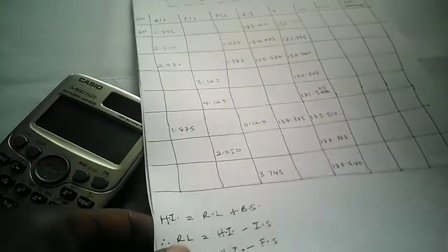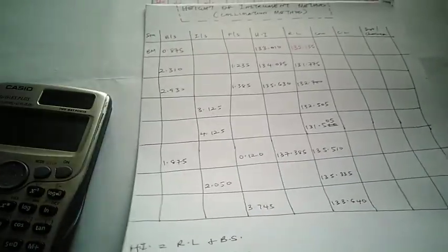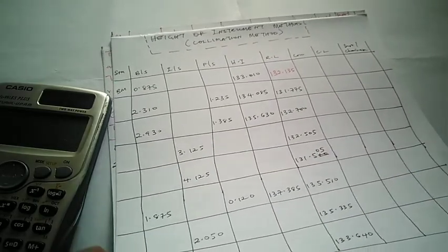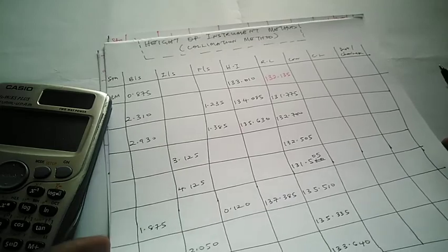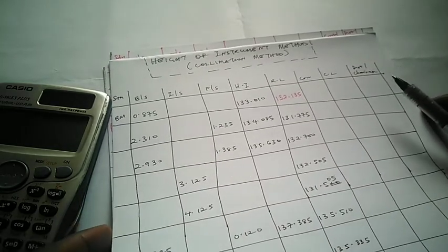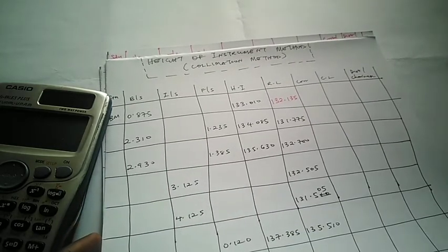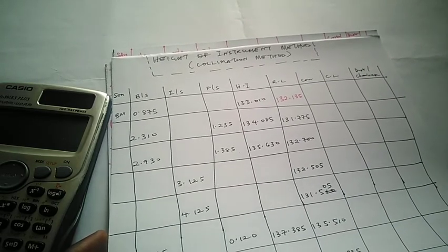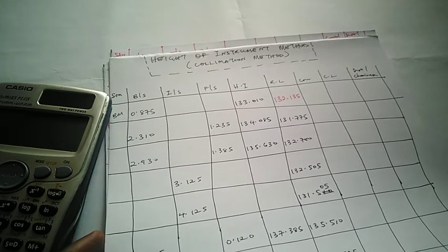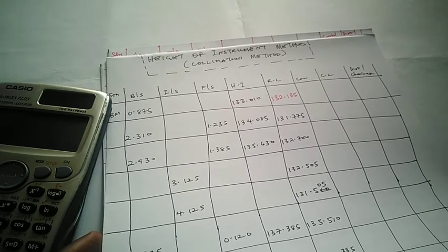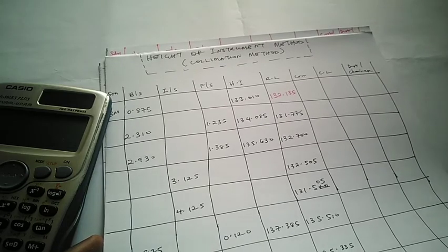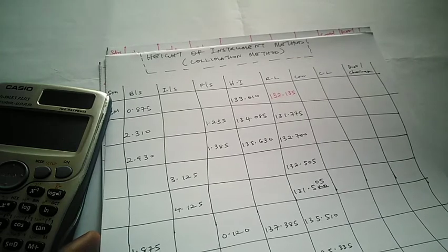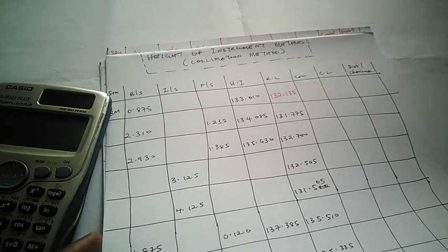I will not give preference to one method over the other. Try both — go through the rise and fall method and the height of instrument method — then see which one is easier for you. In cases where a particular method is not specified, use whichever suits you. Where it is specified, you should know both so you can apply either as required.